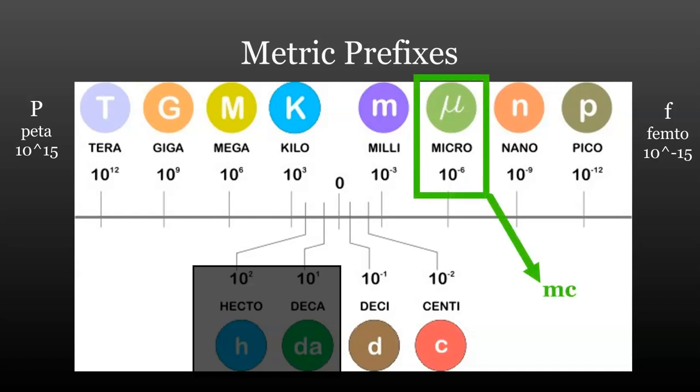Micro is a little bit special. It's usually represented by a lower case Greek letter MU, which you can see in the green circle just above the word micro. Sometimes, though, it's abbreviated with a lower case MC, particularly in health science fields.